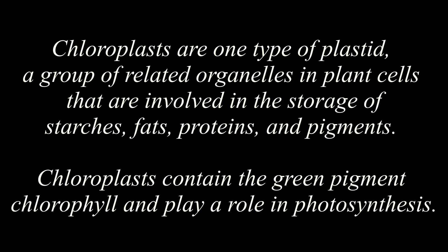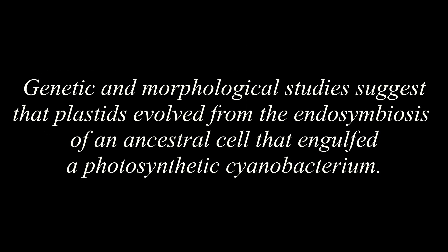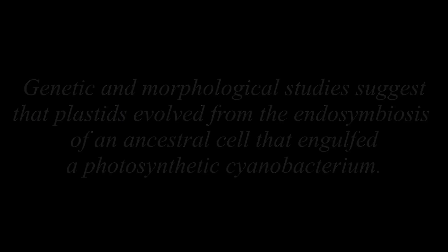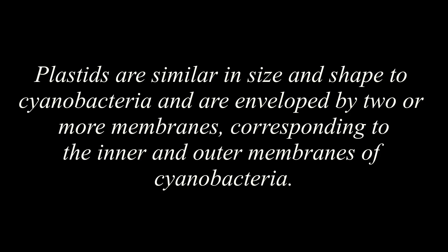Chloroplasts are one type of plastid, a group of related organelles in plant cells that are involved in the storage of starches, fats, proteins, and pigments. Chloroplasts contain the green pigment chlorophyll and play a role in photosynthesis. Genetic and morphological studies suggest that plastids evolved from the endosymbiosis of an ancestral cell that engulfed a photosynthetic cyanobacterium. Plastids are similar in size and shape to cyanobacteria and are enveloped by two or more membranes corresponding to the inner and outer membranes of cyanobacteria.